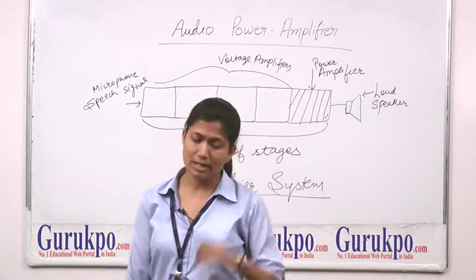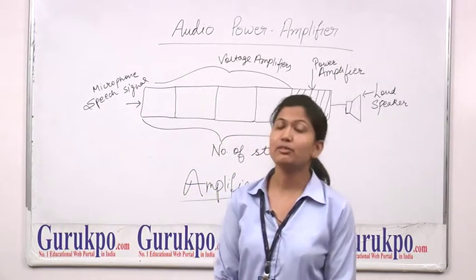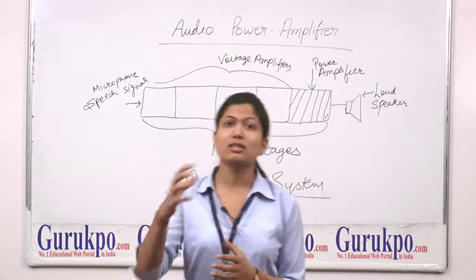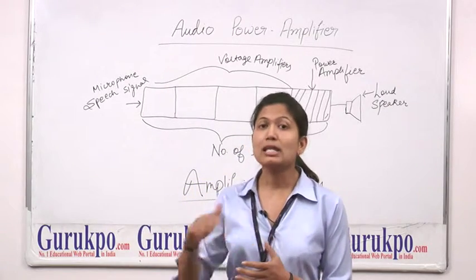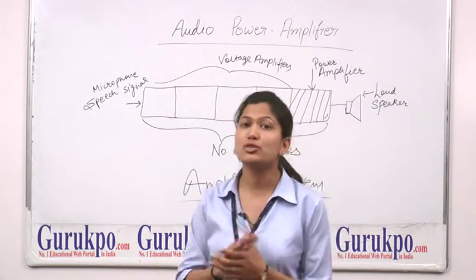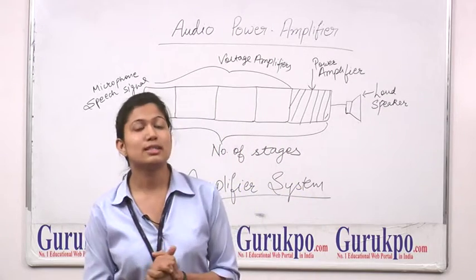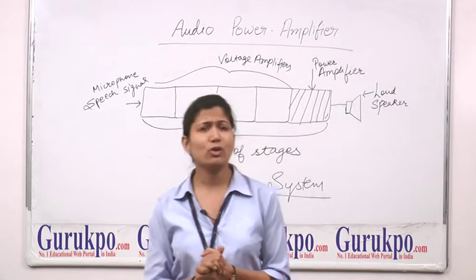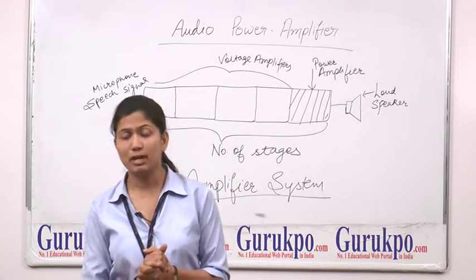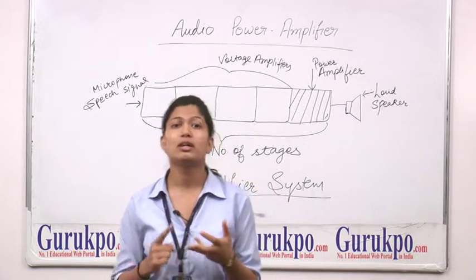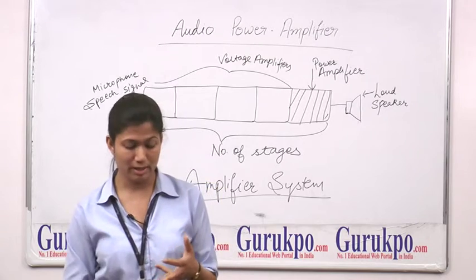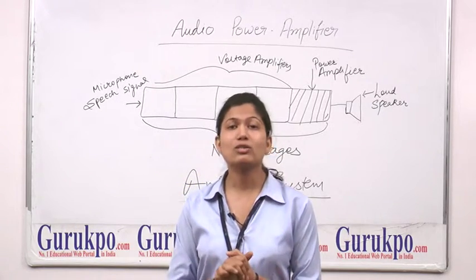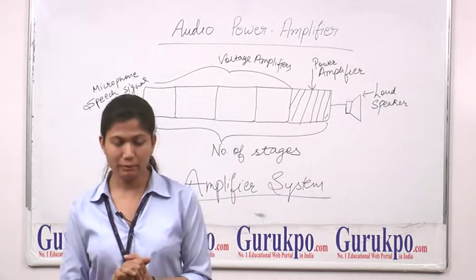So the first question arises in our mind: what is an amplifier? An amplifier is an electronic circuit which takes a signal from the input and makes it stronger. In technical terms, we can say that it increases its magnitude. There are various types of amplifier like radio amplifier, signal amplifier, and operational amplifier. But today, we will focus on audio power amplifier.